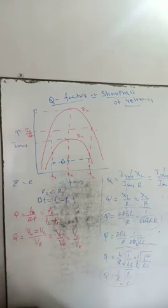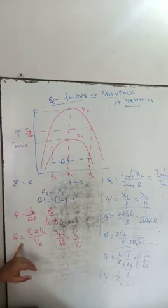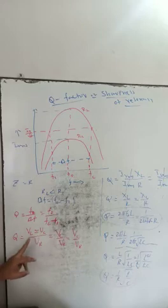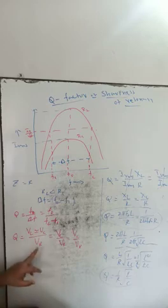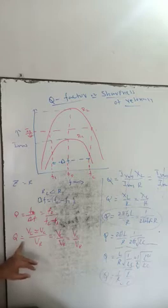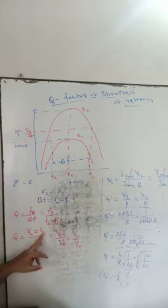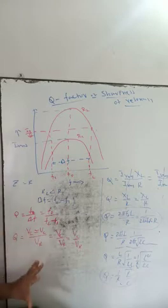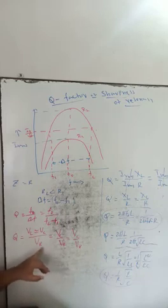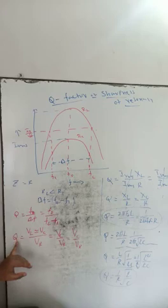The bandwidth difference gives another definition of quality factor. Quality factor: V_L or V_C divided by V_R — the voltage across the inductor or voltage across the capacitor in the resonant circuit divided by the voltage across the resistor is called the quality factor. The ratio of voltage across the inductor or capacitor to the voltage across the resistor is the quality factor.